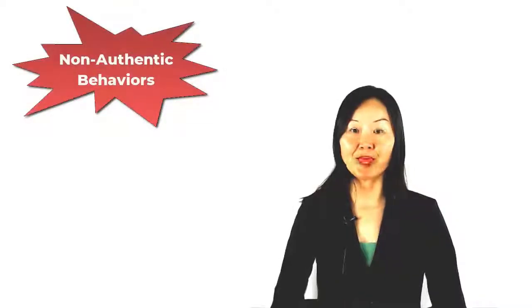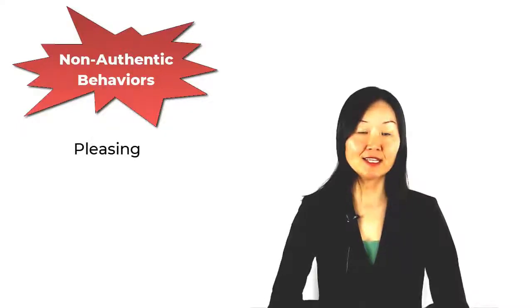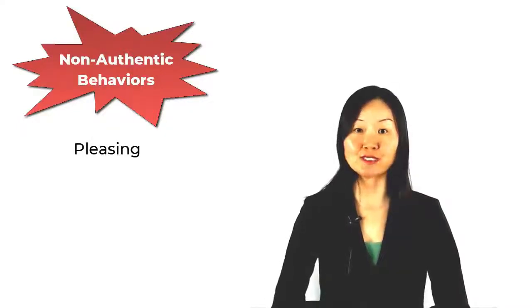To better understand authentic leadership, we can also look at the opposite to authenticity, which are reflected in a leader's behavior. For example, pleasing: the leader needs to please others to feel self-worthy.